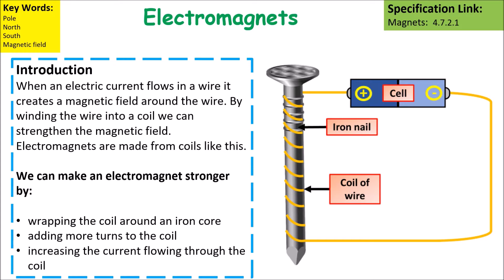We can make the electromagnet stronger by wrapping the coil around an iron core, adding more turns to the coil, and increasing the current flowing through the coil.